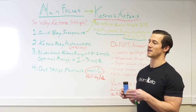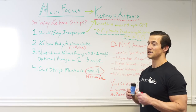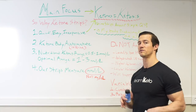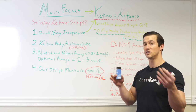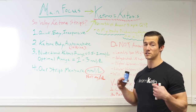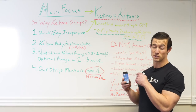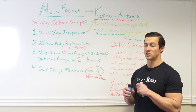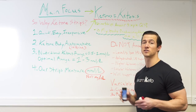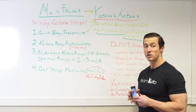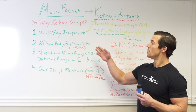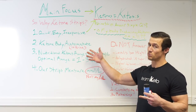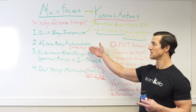It's definitely not the most accurate way. The ketone strips are definitely not the most accurate way of measuring exact millimoles per liter or percentages of ketones produced, because it is only measuring one out of the three ketone bodies — specifically acetoacetate.